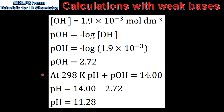As the question asks for the pH at 298 K, we use pH plus pOH equals 14.00. Therefore, pH equals 14.00 minus 2.72, giving a pH value of 11.28.